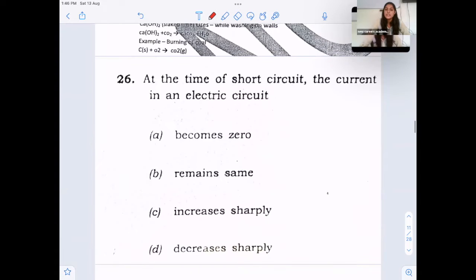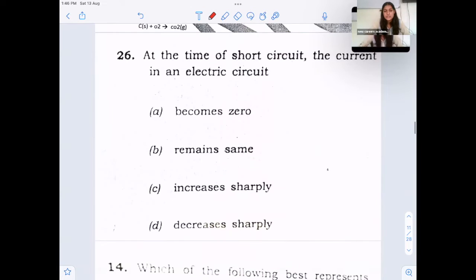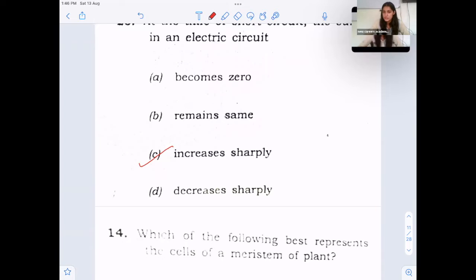Next question, at the time of short circuiting, the current in an electric circuit. So during short circuiting, the current in the circuit, it increases rapidly. Answer is C, increases sharply. So to avoid this electric fuse is used.